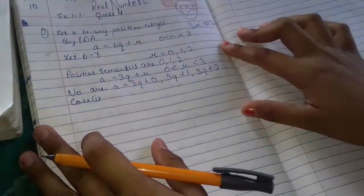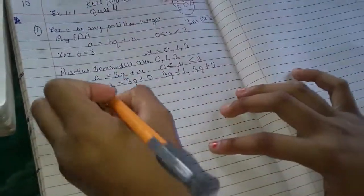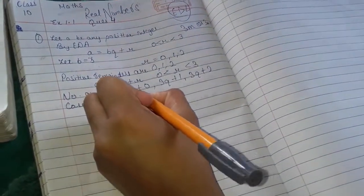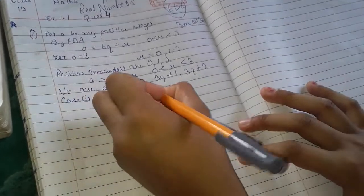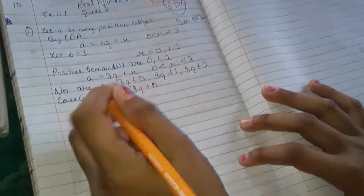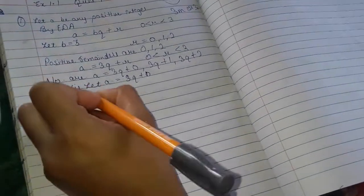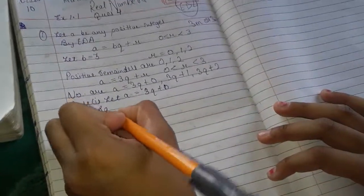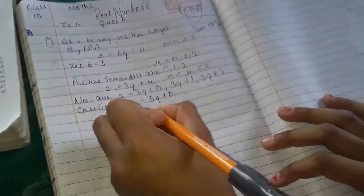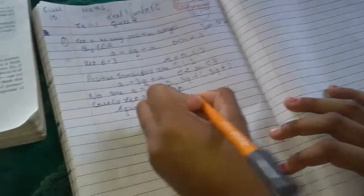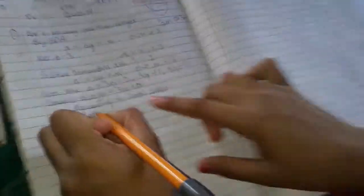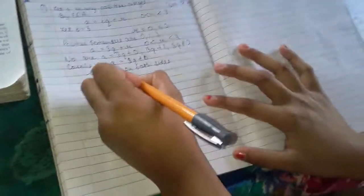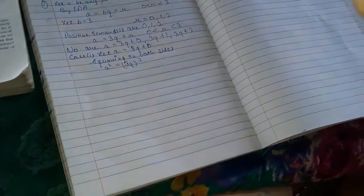Let A equals 3Q. Squaring both sides, A squared equals 3Q squared, which equals 9Q squared. This can be written as 3 times 3Q squared.